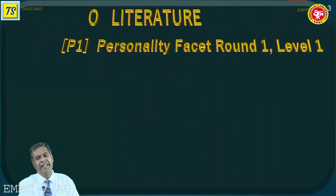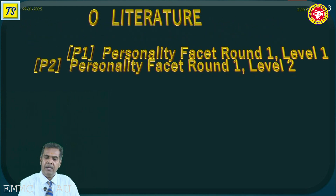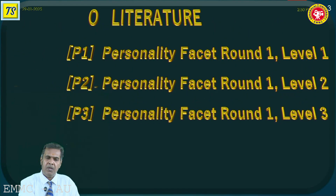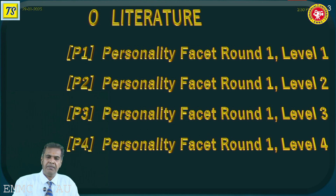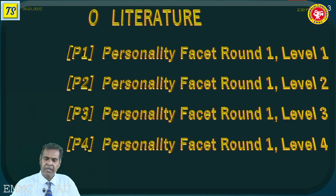Ranganathan has identified four levels of personality facet in the main class literature. You are observing the four levels: P1, P2, P3, and P4. Personality facet is one of the fundamental categories. Before understanding the categories, you need to be familiar with the concept of rounds and levels, because Ranganathan has applied the four levels in one round in the main class literature.